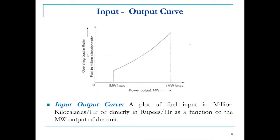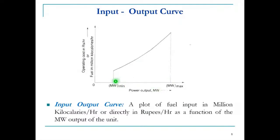The performance curves used in a station include the input-output curve, which is the plot of fuel input in million kilocalories per hour against output power in megawatt, or directly in rupees per hour as a function of output power. The curve has a minimum value (Mw_min), below which operation is uneconomical or technically infeasible, and a maximum value (Mw_max) beyond which the generator cannot be loaded.